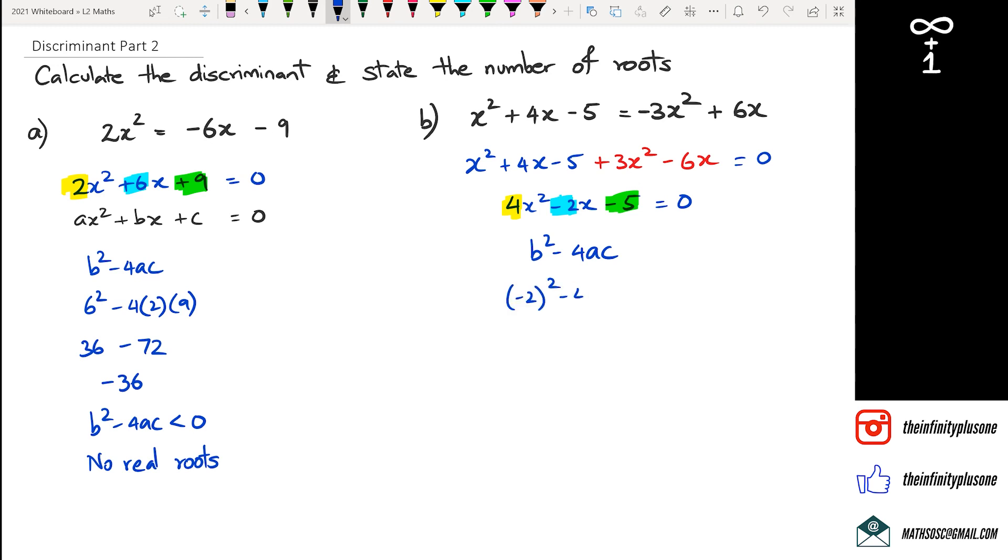I've got (-2)² - 4 × 4 × (-5). When I do this I get 4 + 80, and my discriminant is 84.